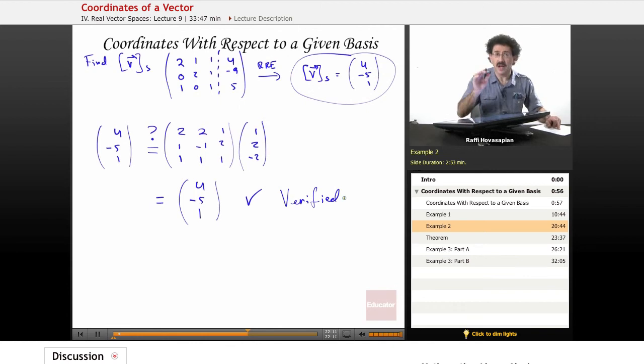Again, our equation is this. If I have some coordinate vector with respect to a basis t, and I want to find the coordinates with respect to another basis, s, I multiply on the left with something called the transition matrix. And that will give me the coordinates with respect to s.